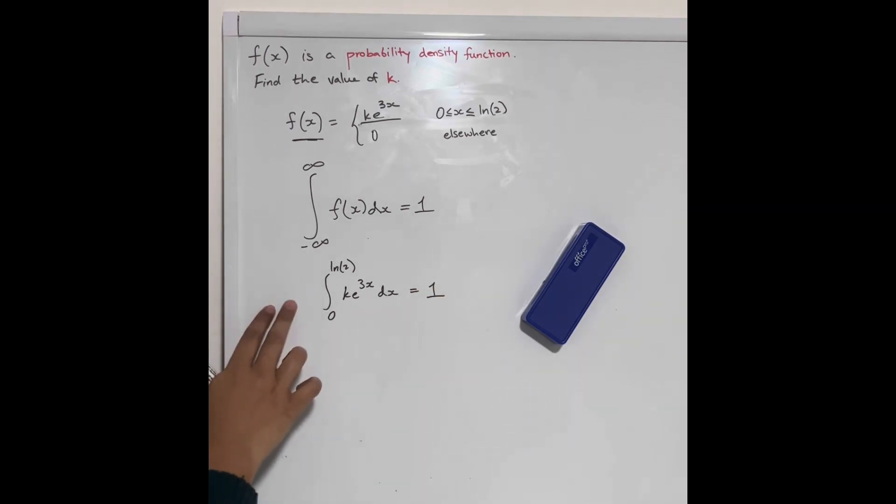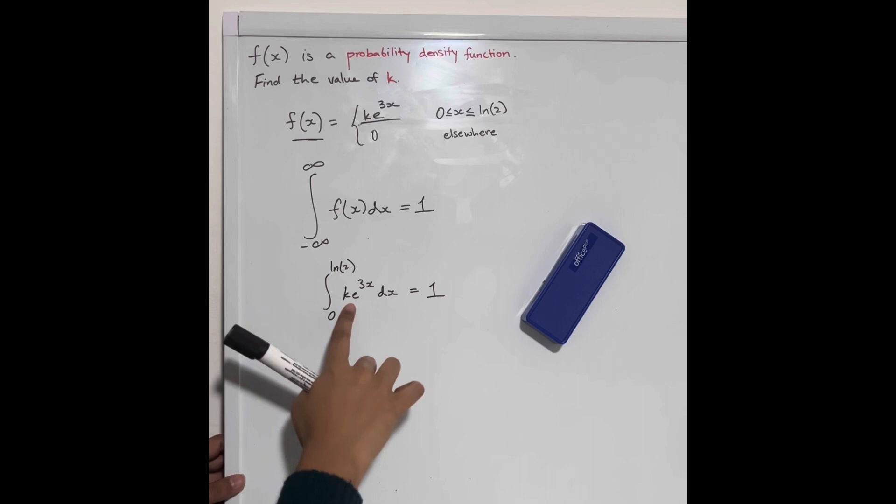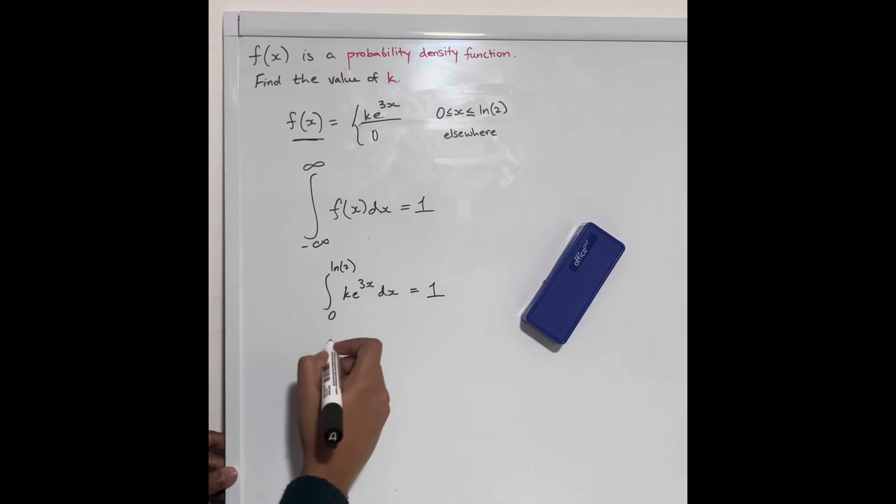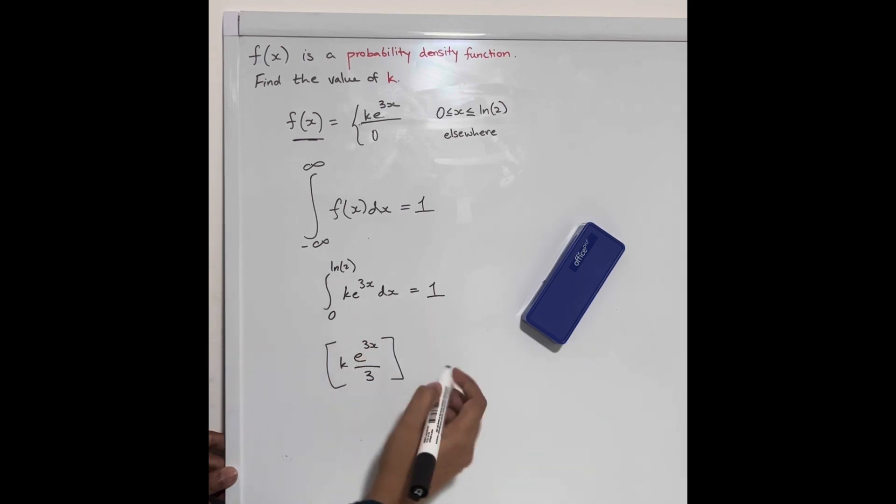Let's go ahead and solve this. k is a constant, so e to the 3x will integrate to e to the 3x divided by 3, and we're still going to multiply that with k, and now we want to find that between 0 and ln 2.